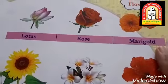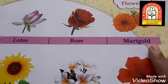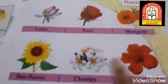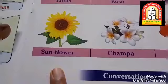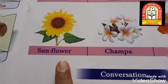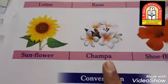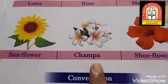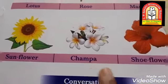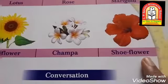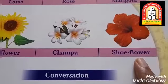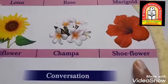This is rose. This is marigold. This is sunflower. Then this is champa. And last, soufflau.